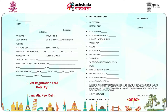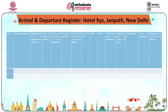Some mandatory important registers used for registration: First, the guest registration register. In this register, the following details are noted: date of registration, name and address of the guest, nationality, where the guest arrived from, proceeding to, time of arrival, expected date and time of departure, type of room, number of pax, booking taken by, and billing instructions.